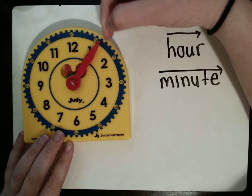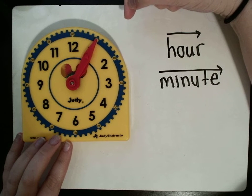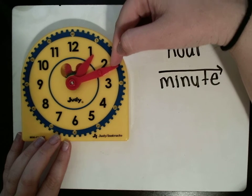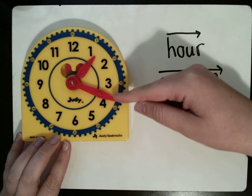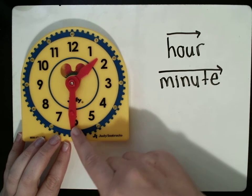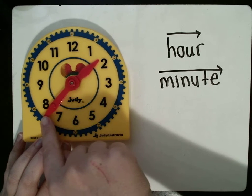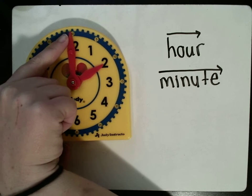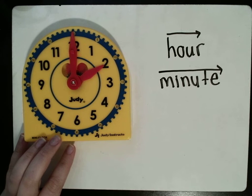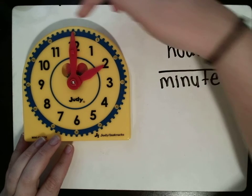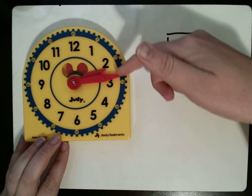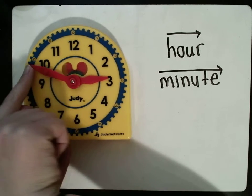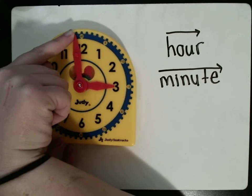Now, I'm going to move the minute hand around. And as I move it around, I want you to pay attention to what's happening to the hour hand. Do you notice that it is very slowly moving towards the 2? That is because once that minute hand gets back up to the top, it is 2 o'clock. So, as I'm going around the clock, it's going towards the next hour. We're getting closer and closer and closer to the next hour, which is now 3 o'clock.